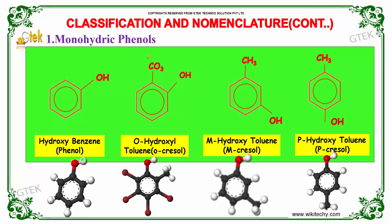Monohydric Phenols. This is the general structure of hydroxybenzene, also known as Phenol. The first position is known as Orthocresol. If the OH group is present in the second position, it is known as Metacresol. And if the OH group is present at the opposite direction to the CH3 group, it is known as Paracresol. The three-dimensional structures of Ortho, Meta, and Para are depicted here.